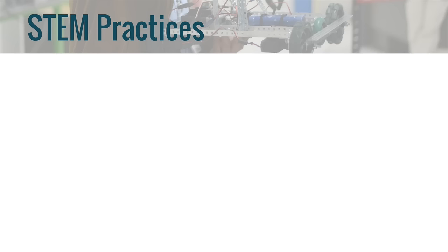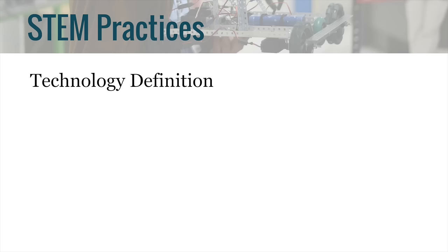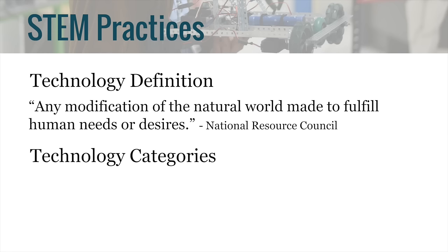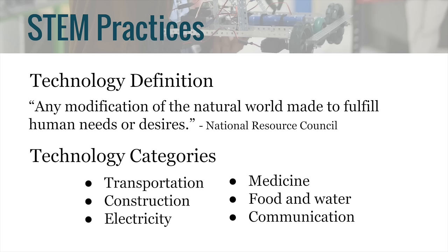The book also provides four technology practices. Before listing these practices, I want to talk about the definition of technology. The term is usually used for anything that needs to be plugged in, especially a computerized device. However, the National Resource Council states that technology is any modification of the natural world made to fulfill human needs or desires — so a hammer or a pencil would be examples of technology. The book categorizes technologies into six groups: transportation, construction, electricity, medicine, food and water, and communication.